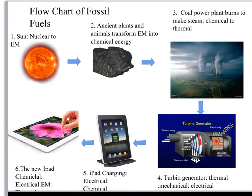The second step is that this electromagnetic radiation makes its way to planet Earth in the form of visible light, where ancient plants — trees, ferns, these sorts of things — take this electromagnetic radiation and convert it into chemical energy through the process of photosynthesis. So photosynthesis is actually an energy conversion process.